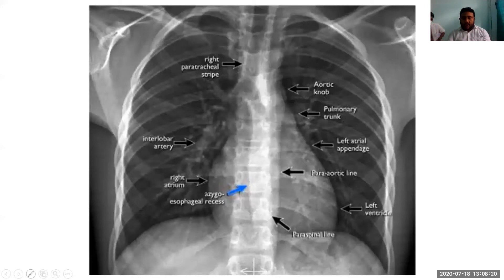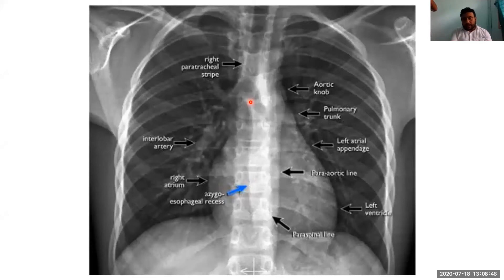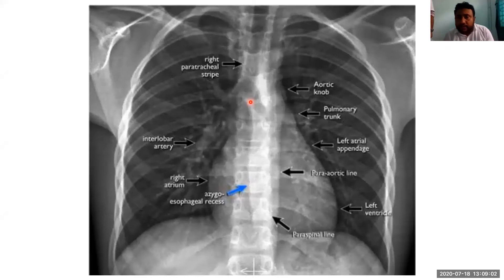X-rays are mainly of two types: plain X-rays and contrast X-rays. Plain X-rays are taken without any contrast material. Contrast X-rays are usually taken after the administration of contrast material. Contrast X-rays include Barium Swallow, Barium Enema, Pyeloureterography, Cholangiogram, and intravenous pyelogram. Today we will discuss plain X-rays; in the next class we will discuss contrast X-rays.